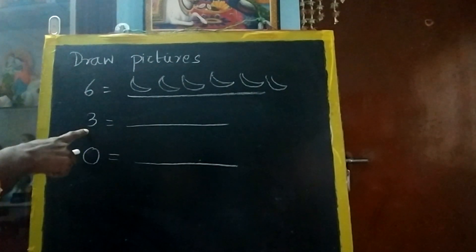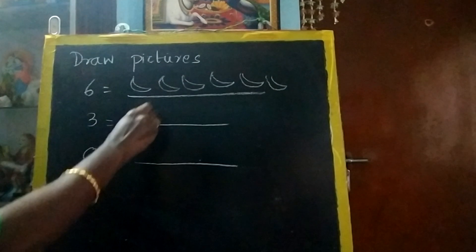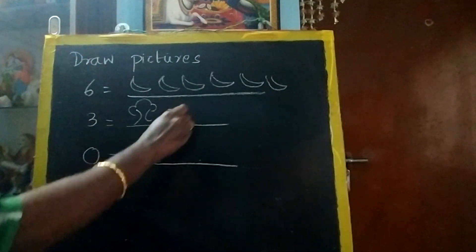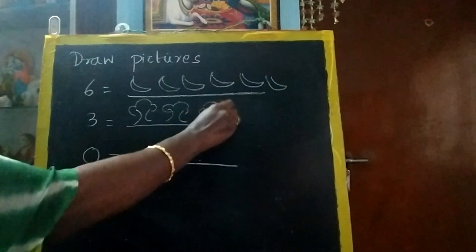Now what number is this? 3. So you have to draw 3 pictures. I am going to draw a tree. 1, 2, 3.